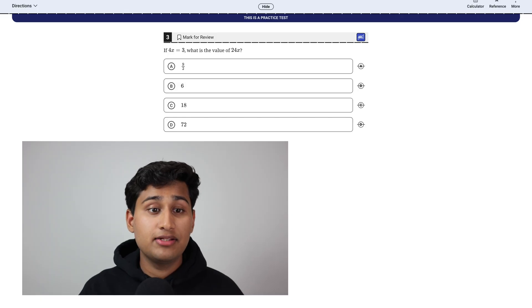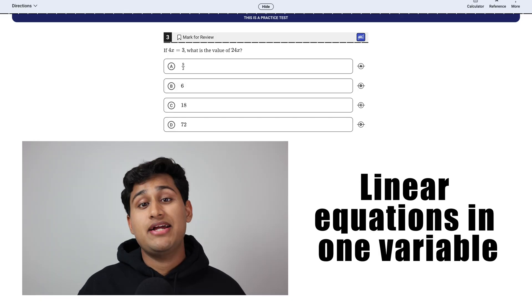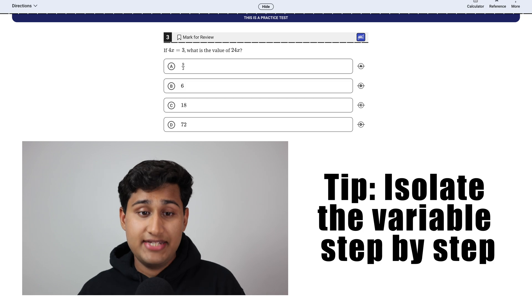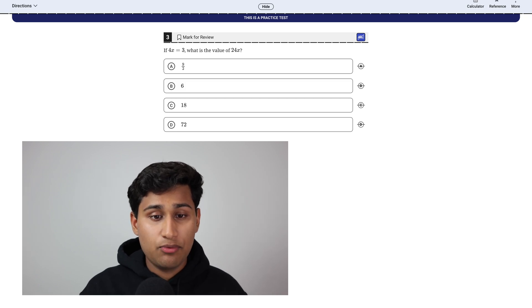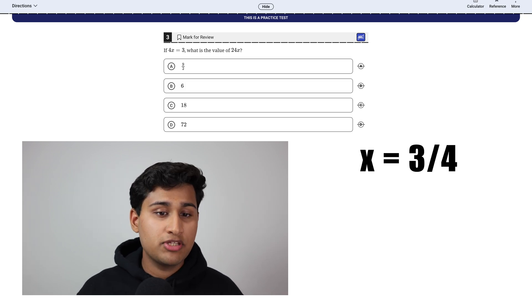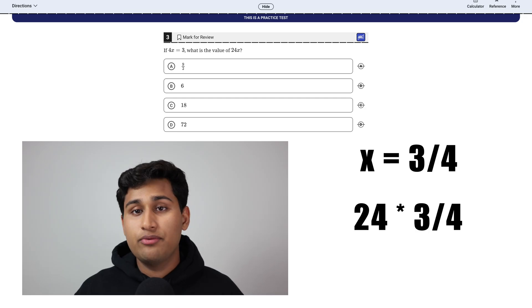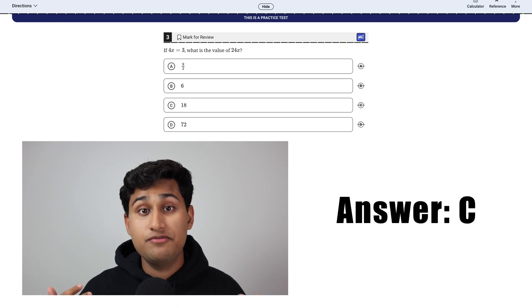So this question is asking about linear equations in one variable. My tip for this one is to isolate the variable step by step. Here what we want to do is make X equal to three over four, which then we can multiply 24 times three fourths, which equals 18 and gives us our answer of C.